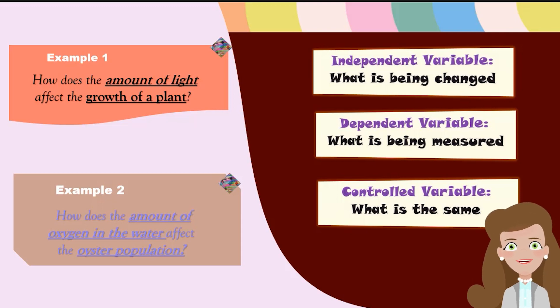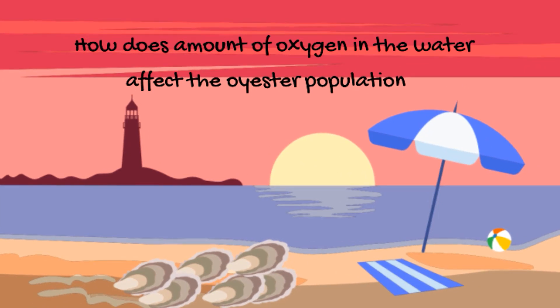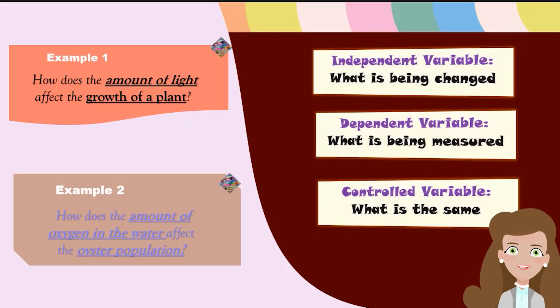Another example is how does the amount of oxygen in the water affect the oyster population? In this case, we are changing the amount of oxygen in the water. So that will be my independent variable. And what we're measuring is the oyster population, which will be my dependent variable. The control variable might be time or a specific species of oysters in this experiment. Each experiment will have different variables that we can use to make sure that the test being conducted is fair.